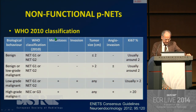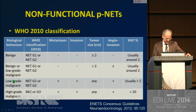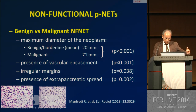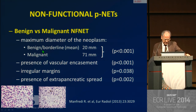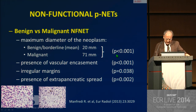Coming back to the WHO classification, this classification distinguishes behavior into benign, benign low-grade malignant or borderline, and high-grade malignant. This distinction is based on metastasis, invasion of surrounding organs, tumor size, and angioinvasion. We tried to see if we were able to predict the benign or malignant nature of this tumor based on a series of cases examined by MRI, published last year in European Radiology. We could show there are features that predict benign or malignant nature — first of all, the diameter: in our series, the mean diameter was 20 mm for benign lesions, while for malignant lesions it was 71 mm, a statistically significant difference.